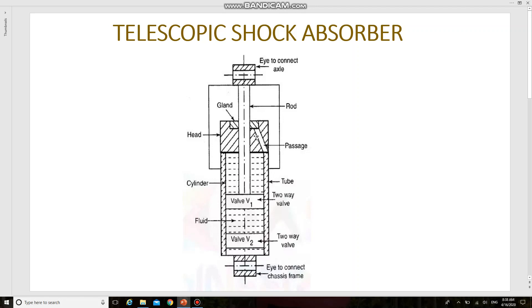Now we'll see the working. When the vehicle comes across a bumper, the lower eye will move up. So this is the lower eye. It will move up, so the fluid flows from the lower side of the valve v1 to the upper side.